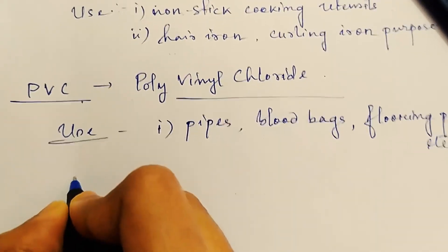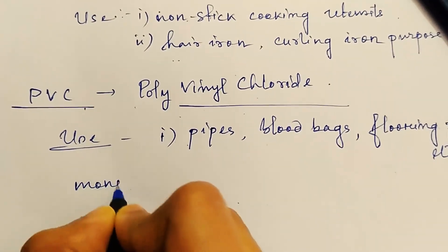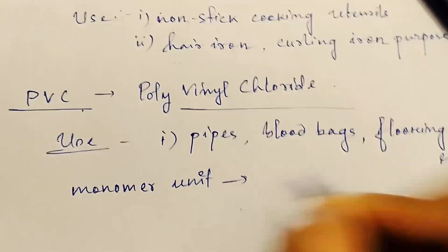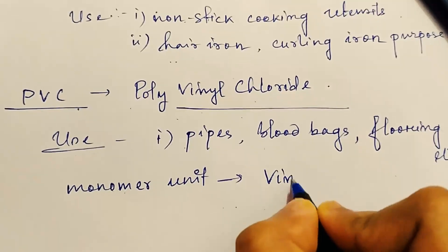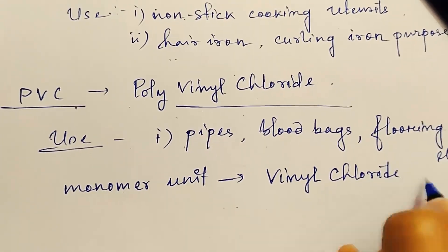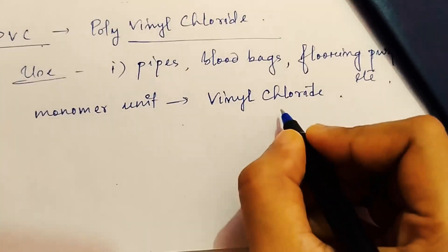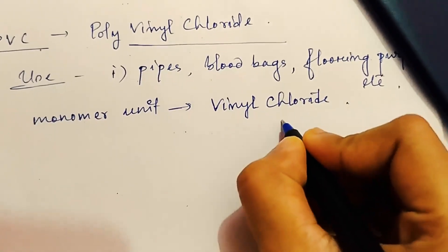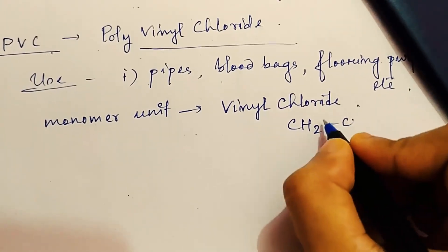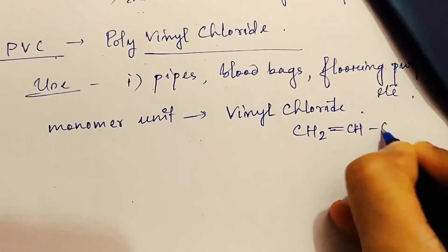In PVC the monomer unit, you have to remember the monomer unit is vinyl chloride. The formula is CH2=CHCl.